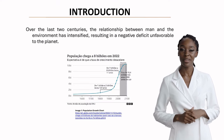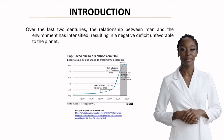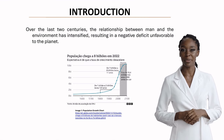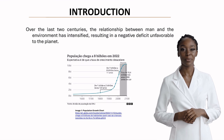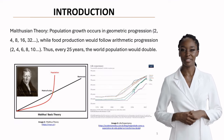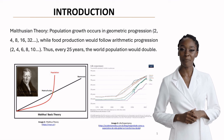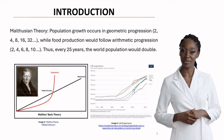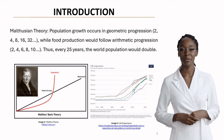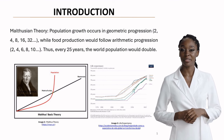Over the last two centuries, human-environment relationships have intensified significantly. This graph illustrates the dramatic population growth we've experienced, creating an unprecedented environmental deficit that affects our planet's sustainability. Malthus's theory becomes particularly relevant here — he proposed that while population grows geometrically, food production increases arithmetically. This disparity creates a fundamental challenge for food security, especially as our global population continues to expand.